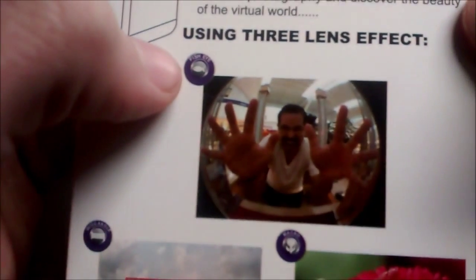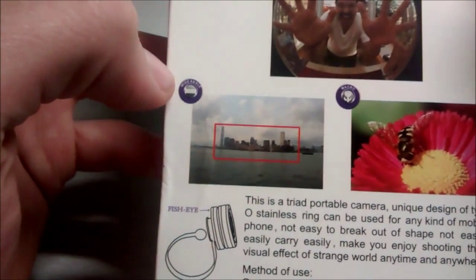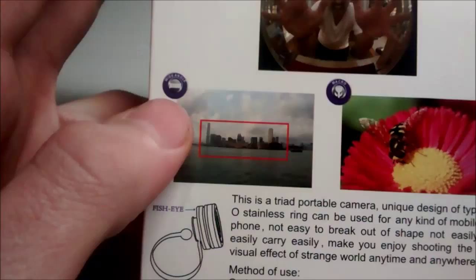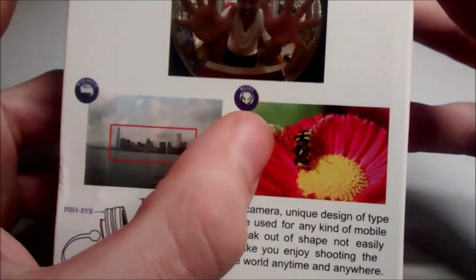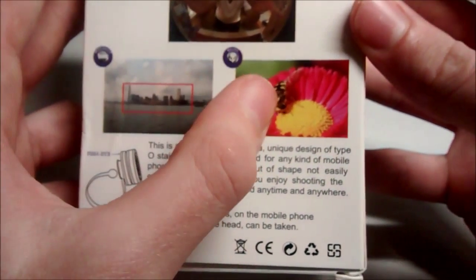So here we can see the fisheye lens which is sort of like a bowl, which looks really cool. Here we have the wide angle lens, so as you can see it's more of a wider angle. And here we have the macro lens, which is really good if you want to take pictures up close of things like flowers.